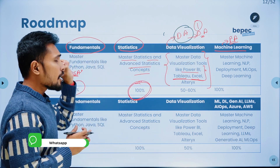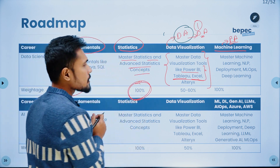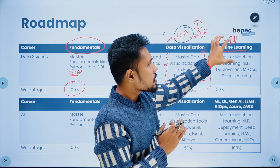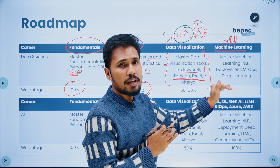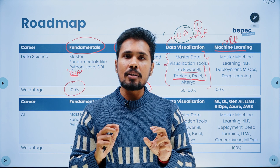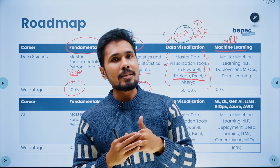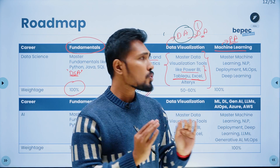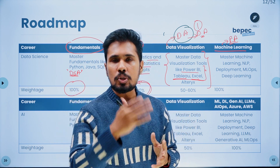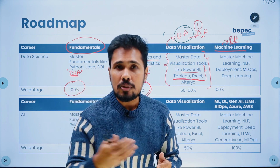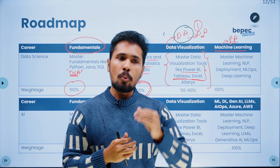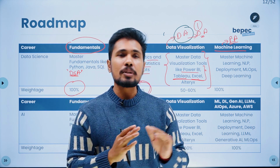Once you complete data analytics, Python, and SQL, get into statistics, and then the last block is machine learning. Your interview questions will be heavily from machine learning — interviewers will ask you about predictive analytics, your end-to-end ML projects, machine learning algorithms, feature selection techniques, feature accuracy improving techniques like scaling techniques, feature transformation techniques, filter methods, wrapper methods, embedded methods, when to do scaling, when not to do scaling, and what is the variance-bias trade-off. There is a lot of theory that happens in machine learning.